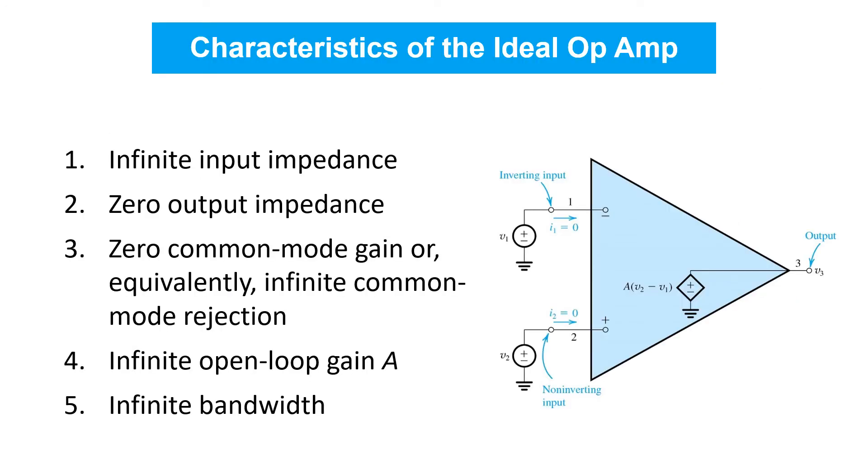Let's summarize the characteristics of the ideal op amp. First, we've said that it has infinite input impedance. This in turn implies zero input current. Second, we've seen that it has zero output impedance, so the output acts as an ideal voltage source. Third, we saw that the output doesn't respond at all to the common mode input. We say it has therefore zero common mode gain, or equivalently it completely rejects the input common mode. We therefore say it has infinite common mode rejection.